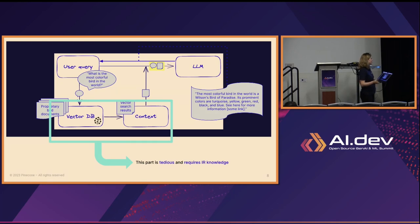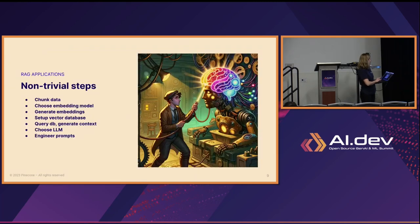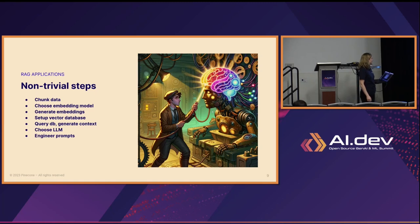While RAG is powerful, the vector database and context retrieval aspect is easy but tedious, requiring dev hours and research to do well. Some of the non-trivial steps involved are: chunking up your data, choosing an embedding model, actually using that model, setting up your vector database, querying that database, choosing your LLM, and finally prompting that LLM with system-level prompts, context prompts, and all the prompts. All of these things take a lot of time.